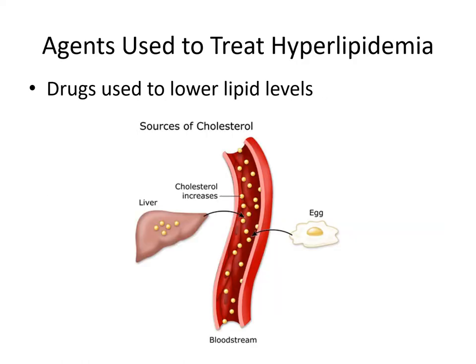As nursing students, we focus on pharmacological agents used to treat hyperlipidemia — what drugs lower patients' lipid levels. First, there are dietary steps: eat a low-fat, low-cholesterol diet, keeping total fat consumption to fewer than 30% of daily calories. There are different types of fat — saturated, polyunsaturated, and monounsaturated — and all should be kept low. Saturated fats are contained in butter, whole milk, and shortening.